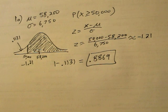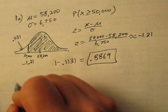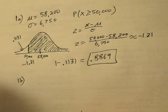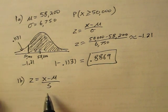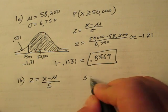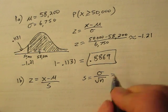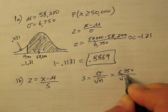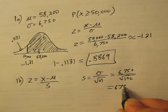We do the problem the same way except for our Z formula. Where S represents our sample standard deviation, our sample standard deviation is sigma over the square root of n. So in this case we have 6750 over the square root of 100, which equals 675.